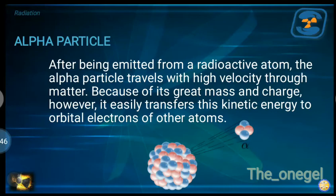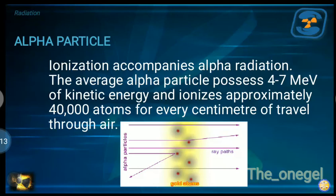After being emitted from a radioactive atom, the alpha particle travels with high velocity through matter. Because of its mass and charge, it easily transfers kinetic energy to orbital electrons of other atoms. Ionization accompanies alpha radiation. The average alpha particle possesses 4 to 7 mega electron volts of kinetic energy and ionizes approximately 40,000 atoms for every centimeter of travel through air.